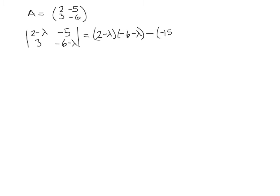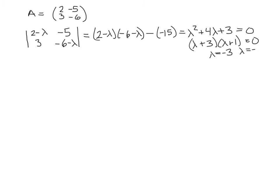Multiplying that all out, we get lambda squared, then positive 6 lambda and negative 2 lambda giving plus 4 lambda, and negative 12 plus 15 giving plus 3. Setting lambda squared plus 4 lambda plus 3 equal to 0 and factoring gives (lambda plus 3)(lambda plus 1) equals 0. So lambda equals negative 3, and lambda equals negative 1.